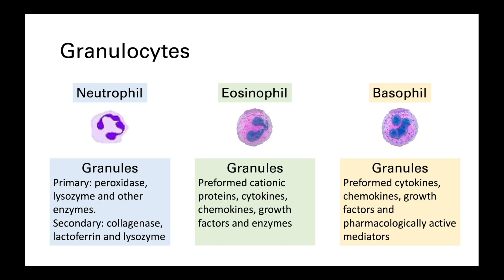Although all these cells contain cytoplasmic granules, the contents are quite different, which reflects their different roles. Neutrophils have a few different types of granules, which mainly contain enzymes and other biologically active substances designed to disrupt pathogen cells. Eosinophil granules have some very specific pre-formed cationic proteins, as well as cytokines, chemokines and growth factors. Basophil granules contain similar types of substances, but they also release pharmacologically active mediators like histamine that contribute to the inflammatory response.